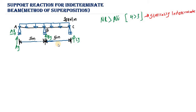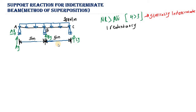This beam is statically indeterminate to the first degree because we have four unknown reactions and three equilibrium equations, giving us one redundancy. This is where the method of superposition comes into play.